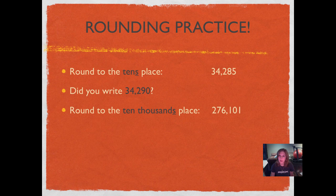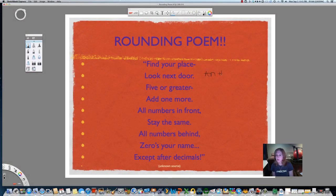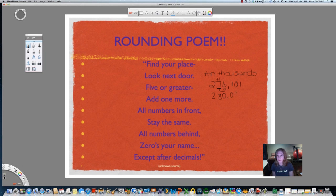Round to the ten thousands place: two hundred seventy-six thousand, one hundred one. Go ahead and write your answer in your journal. Did you write two hundred eighty thousand? Let's take a look. We're rounding to the ten thousands place — that S on the end means we're rounding whole numbers. Two hundred seventy-six thousand, one hundred one: ones, tens, hundreds, thousands, ten thousands — found our place. Look next door. Five or greater — add one more. Seven plus one is eight. All numbers in front stay the same. All numbers behind, zeros your name.